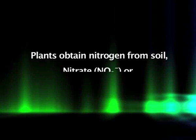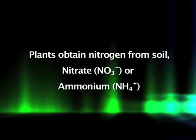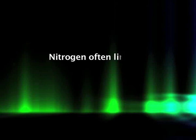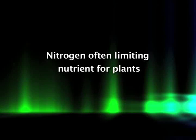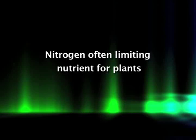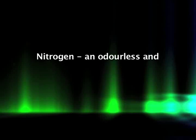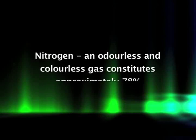Most plants obtain the bulk of their nitrogen from the soil in the form of either nitrate or ammonia, but the supply of nitrogen in the soil pool is limited. Plants must compete with a variety of soil microorganisms for available nitrogen. As a result, nitrogen is often a limiting nutrient for plants in both natural and agricultural ecosystems.